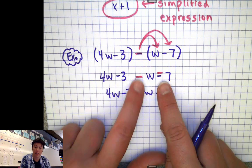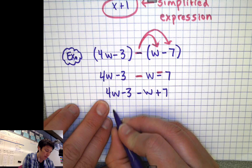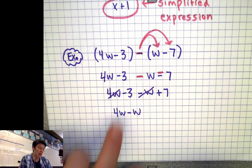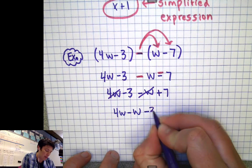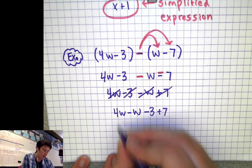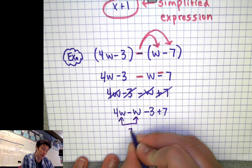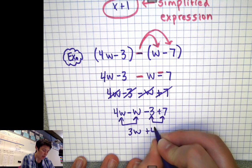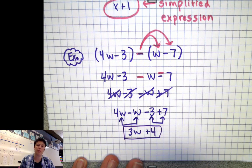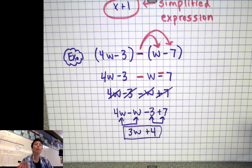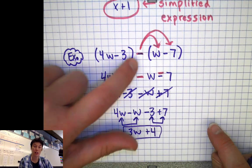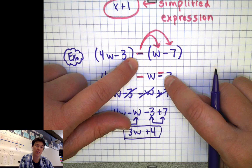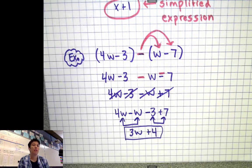So I'm going to put the 4w and the minus w together. And I'm going to put the negative 3 and the plus 7 together. 4w take away w is 3w. And negative 3 plus 7 is different sign subtract. 7 take away 3 is 4. So here we go. 3w plus 4 is our simplified expression. And there it is. But notice what I had to do here. I had to be really careful with this subtraction sign. A lot of people make a common mistake here, forgetting to fix this minus 7 into a minus minus, which is a plus. That's really hard to do. So I'm going to have you try now.